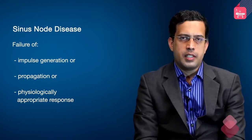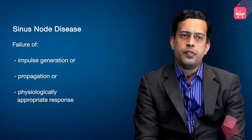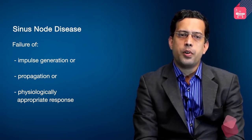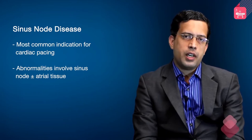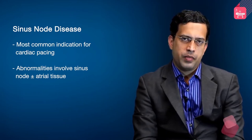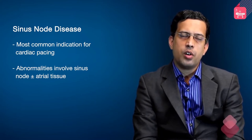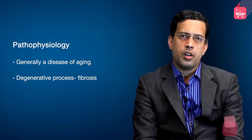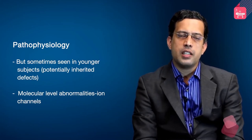Sinus node disease essentially involves a failure of impulse generation from the sinus node, a failure of appropriate propagation, or a failure of a physiologically appropriate response. It is the most common indication for cardiac pacing clinically. An important point is that sinus node disease involves not only the sinus node proper but also the surrounding atrial tissue — it can be thought of as a kind of atrial myopathy. Pathophysiologically, it is most commonly a disease of aging involving degenerative fibrosis of the conduction system, though it can also be seen in younger subjects in the context of certain inherited or genetic conditions.